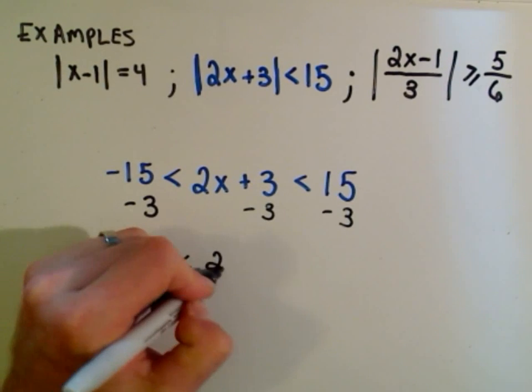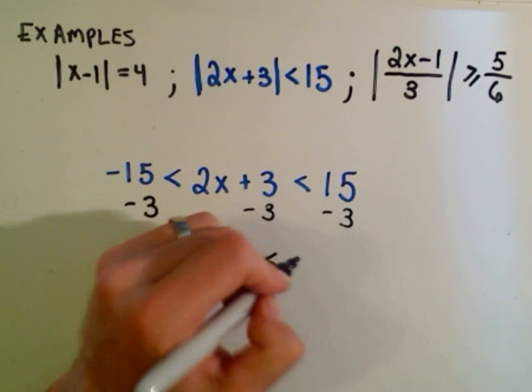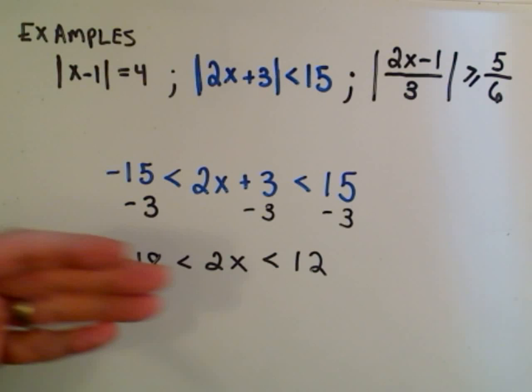Less than, now I've only got 2x left over in the middle. Less than 15 minus 3, which is 12.